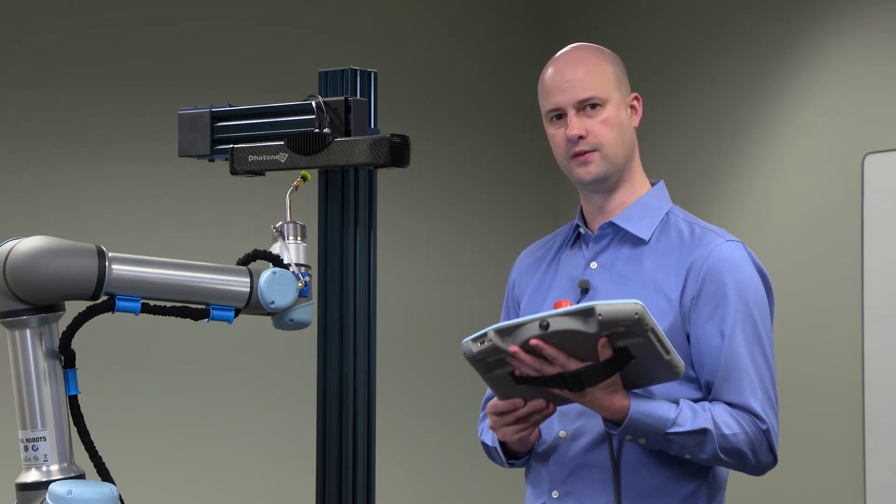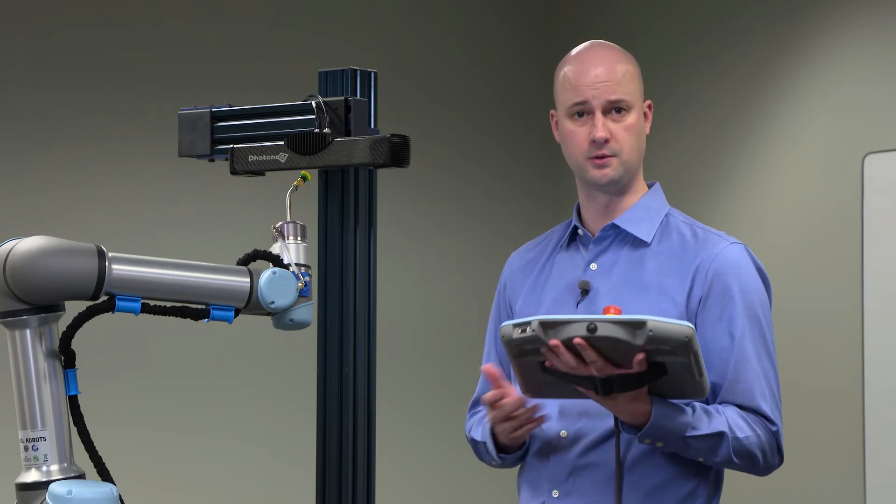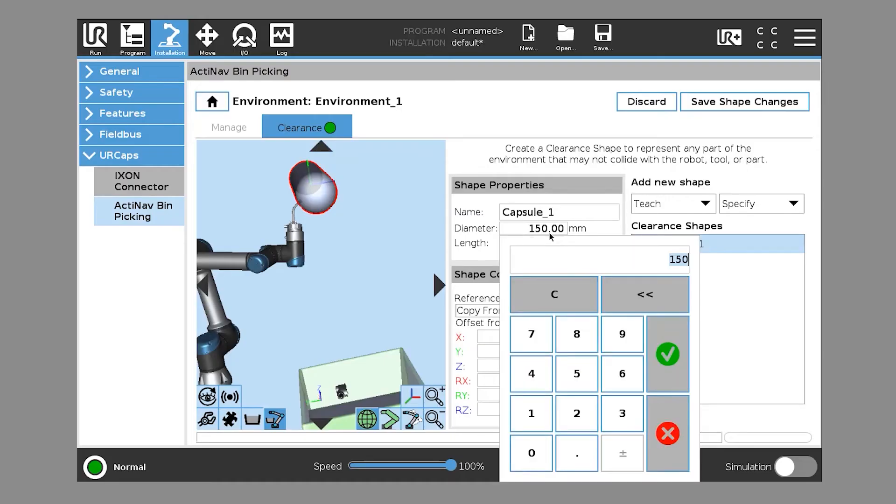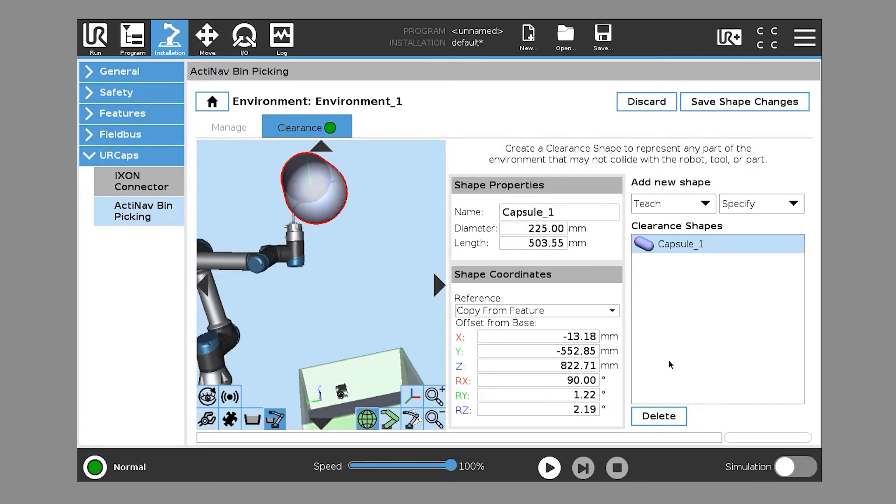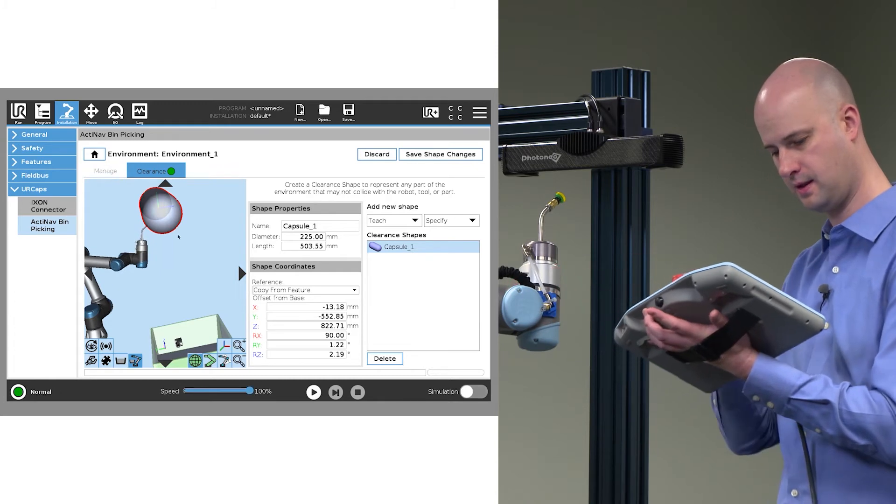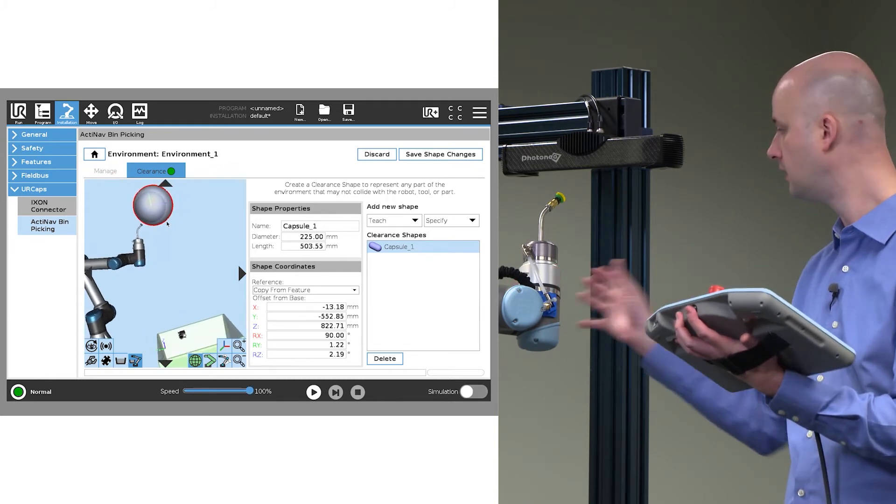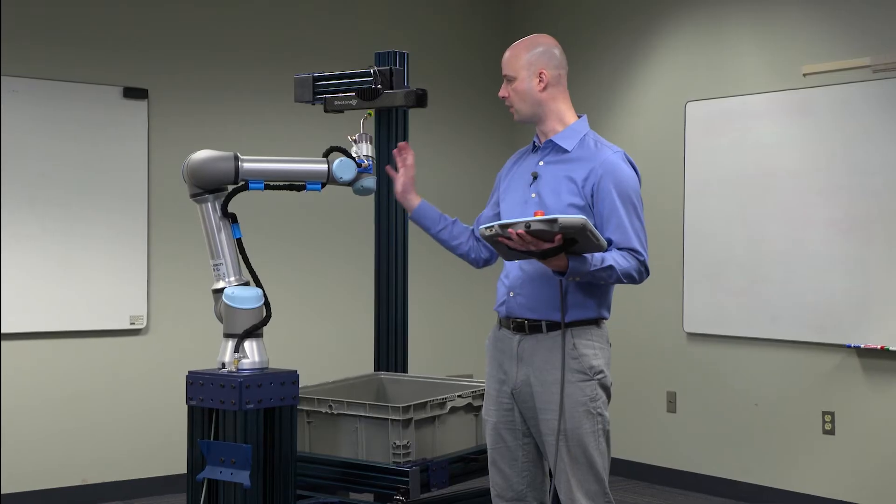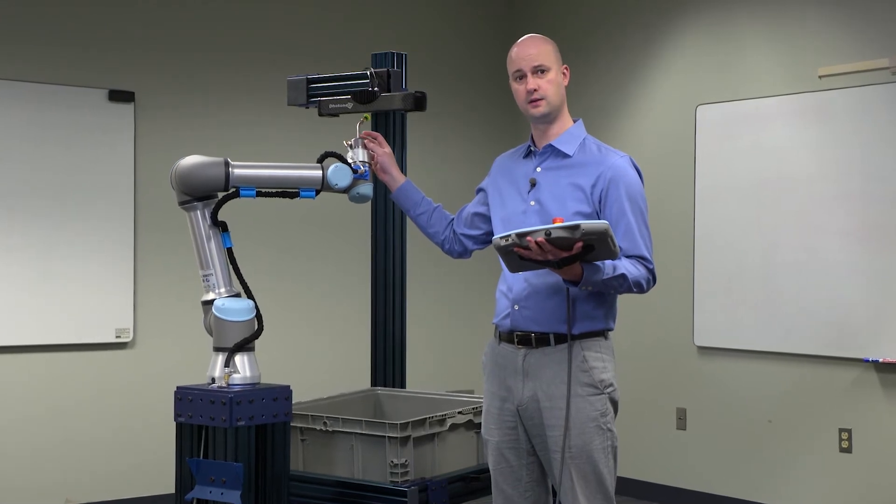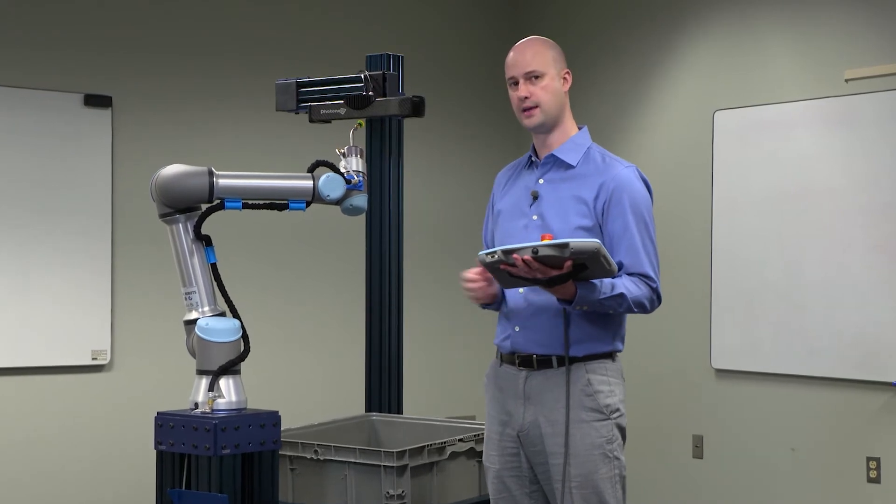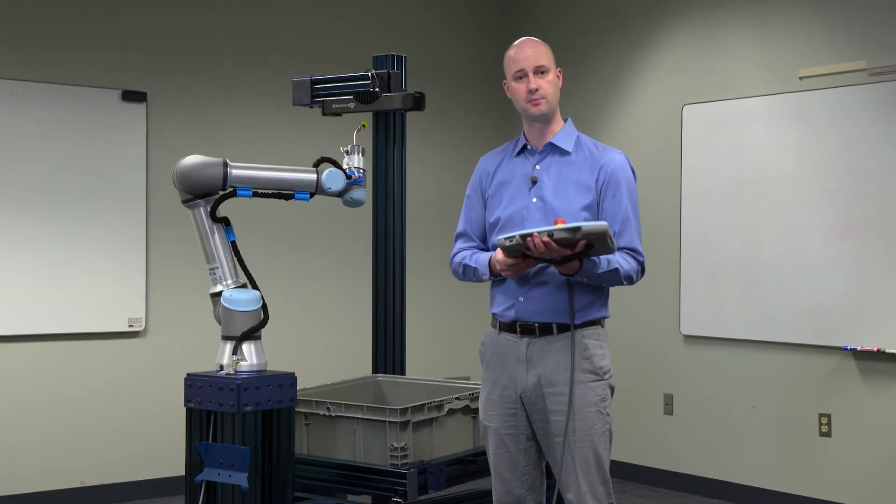But we really want to be a little more conservative. In this case, we don't want to create any pinch zones, for example. So let's go ahead and make this capsule a little bit larger. So we'll go for 225. And now we can check our work again. During autonomous operation, the robot and the end effector that we've trained clearance shapes around will not get any closer to that sensor than that distance right there.